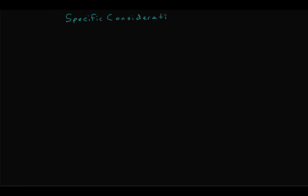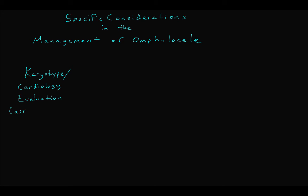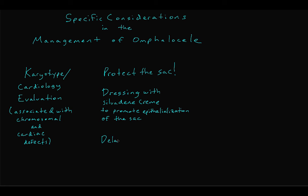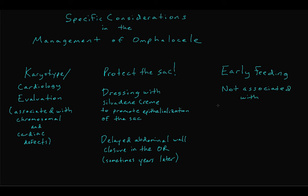Now let's discuss some specific considerations for the management of omphalocele. Remember, omphalocele is associated with other organ system abnormalities, especially chromosomal and cardiac defects, so an echocardiogram and cardiology evaluation should be pursued promptly, although these should not delay operative intervention. The general management principle of omphalocele is to protect the sac. The amniotic membrane protects the intra-abdominal contents and allows them to develop properly; disruption of the membrane is associated with a very poor prognosis. Typically, the sac is dressed with silvadine cream to promote epithelialization — a temporizing maneuver to allow the abdominal wall to grow and restore domain, with repair planned for a later date, sometimes years later. Because the intestines are protected by the membrane with no intrinsic dysfunction, omphalocele babies can be fed early.